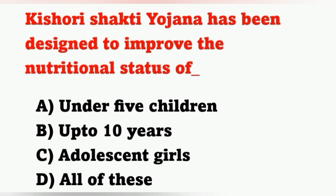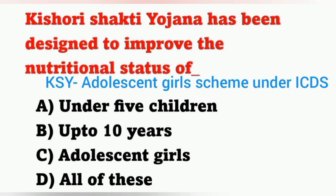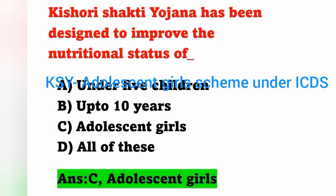Next question: Kishori Shakti Yojana has been designed to improve the nutritional status of? Options: A) Under-five children, B) Up to 10 years, C) Adolescent girls, D) All of these. Kishori Shakti Yojana (KSY) is an adolescent girl scheme under ICDS. It improves the nutritional status of adolescent girls. Option C is the correct answer.